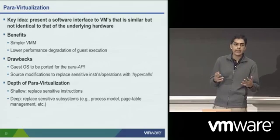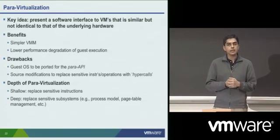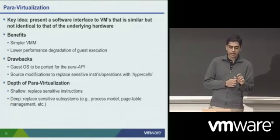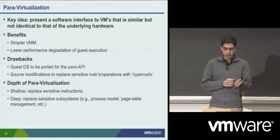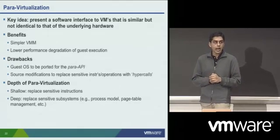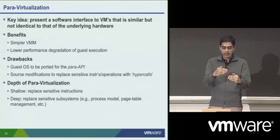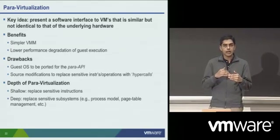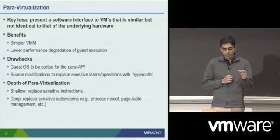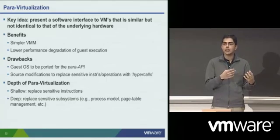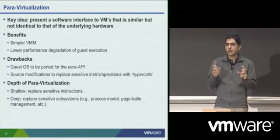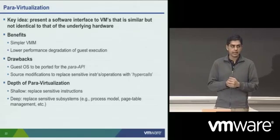Another alternative to do system ISA virtualization would be para-virtualization. The key idea here is you are presenting a software interface to the virtual machine that is similar but not necessarily identical to that of the underlying hardware. Once you remove the strict requirement of being identical, you actually simplify the virtual machine monitor, eliminate the need for trapping in various cases, and lower the performance degradation of the VM's execution. The drawback, of course, is that the guest operating system has to be ported to this similar-but-not-identical interface — what we call a para-API — instead of the underlying hardware's API.